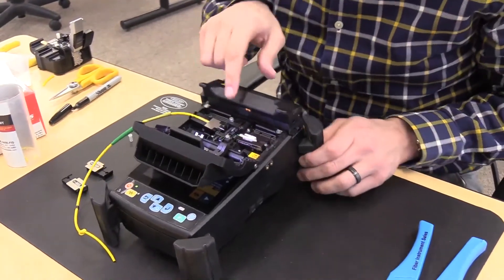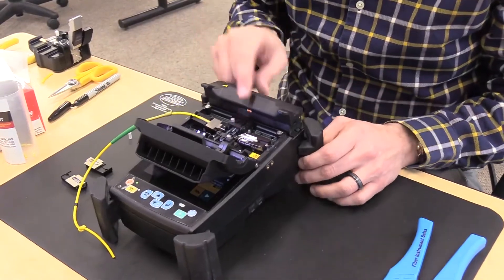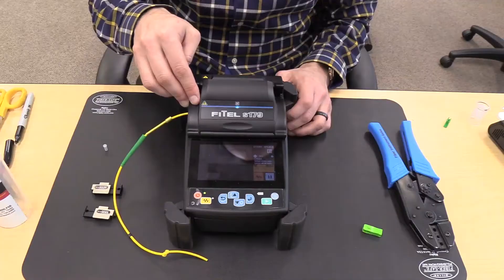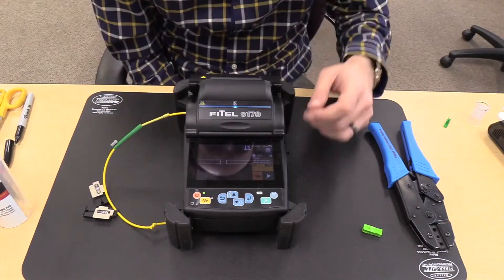Place the connector into the connector holder. Once again, both fibers are past the blue pad of the V-grooves, but are not extended far enough to the electrodes. Close the lid and press the Play Start button.